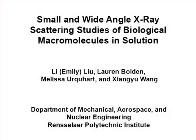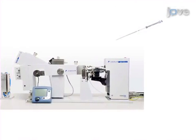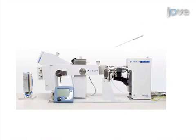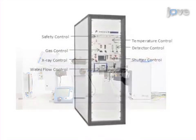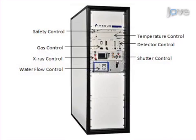The overall goal of this procedure is to determine and analyze structural changes of nanoparticle samples. This is accomplished by first preparing the sample in the capillary and placing it properly into the system. The second step is to calibrate the detectors for optimal efficiency, power on the x-ray system, and ensure a proper vacuum is maintained.